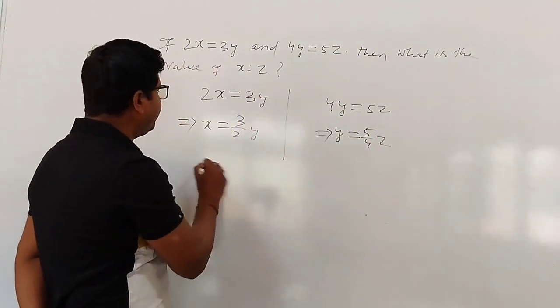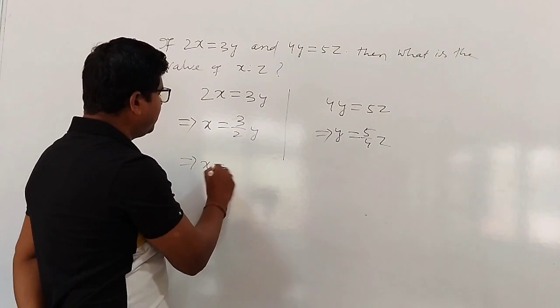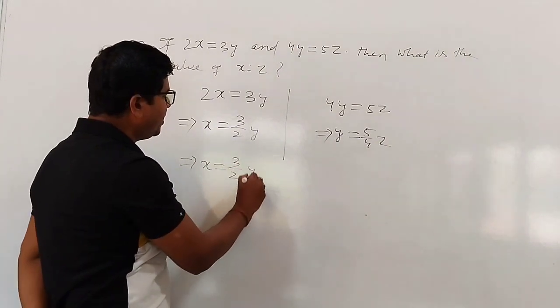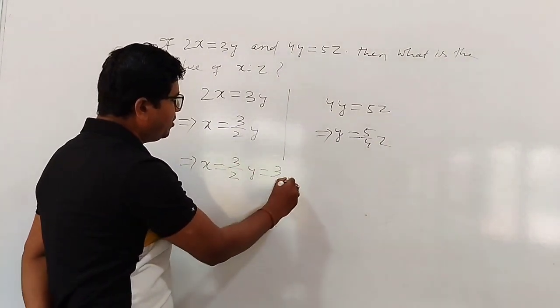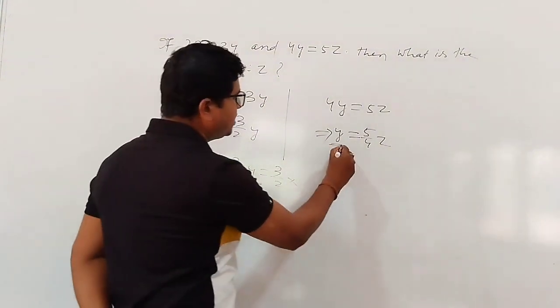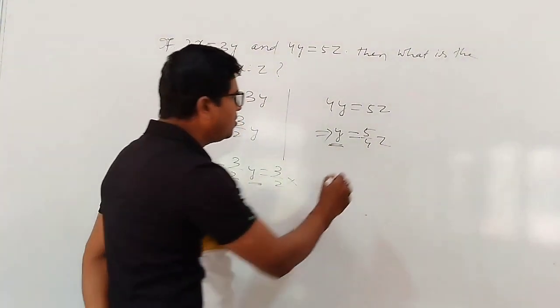Now see, x equals 3 by 2 into y. Now 3 by 2 into y equals how much? Here we get y equals 5 by 4z.